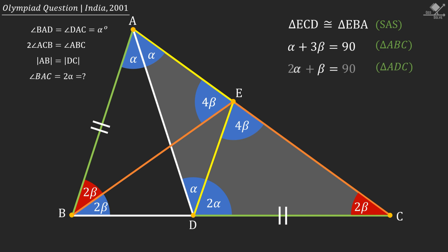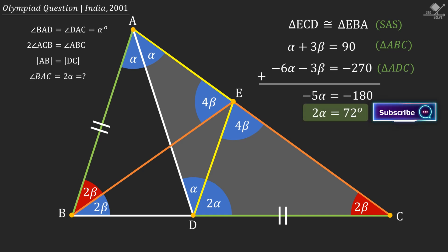Now, let's multiply both sides of the second equation by minus 3 and add these two equations to eliminate betas. Dividing both sides by minus 5, α can be calculated as 36 degrees. And our answer will be 2α = 72 degrees. I'll see you next time.